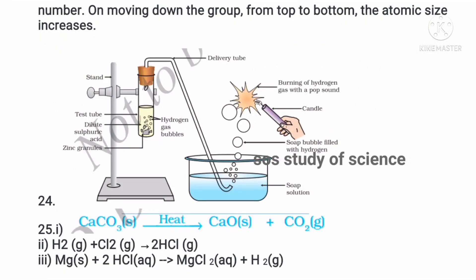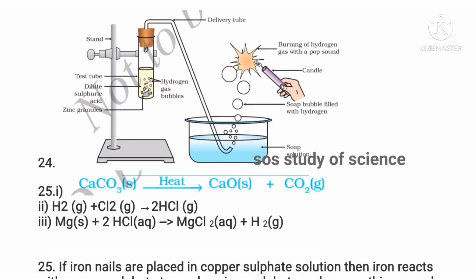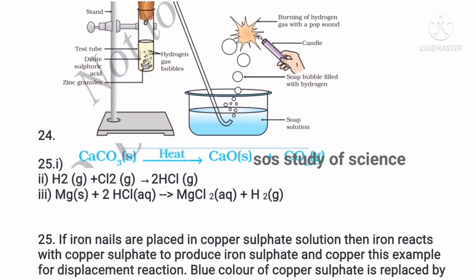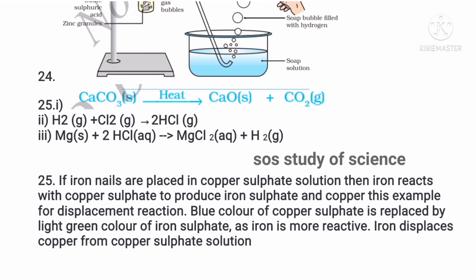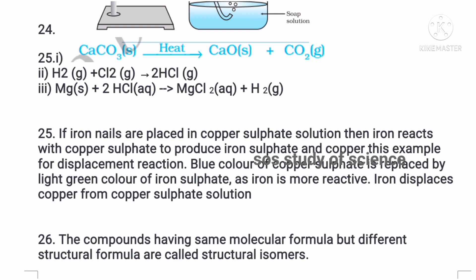The twenty-fourth question asks you to write the reaction of zinc granules with dilute sulfuric acid. They also gave chemical equations to balance: calcium carbonate when heated forms calcium oxide and carbon dioxide (thermal decomposition); H₂ + Cl₂ → 2HCl; magnesium combined with hydrochloric acid forms magnesium chloride and hydrogen gas (displacement reaction).